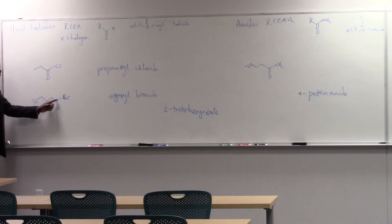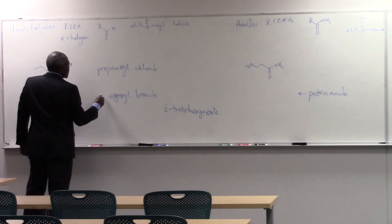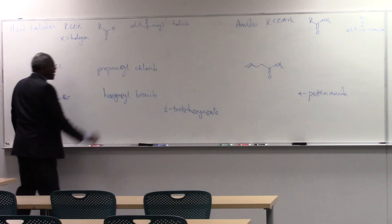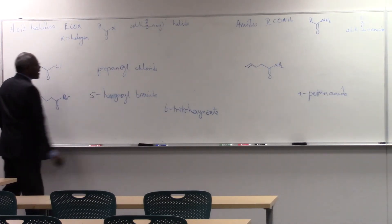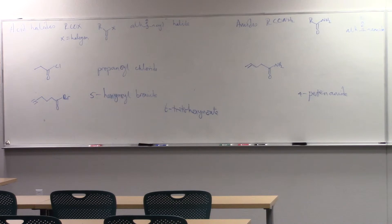1, 2, 3, 4, 5, 6 carbons. So it's a hex inoyl bromide. Where is this group? On carbon number 5. 1, 2, 3, 4, 5. So this carbon is 5-hexinoyl bromide, or hex-5-inoyl bromide.